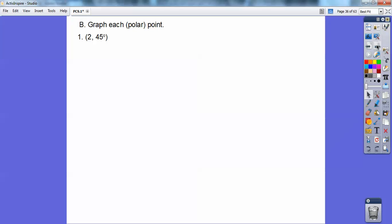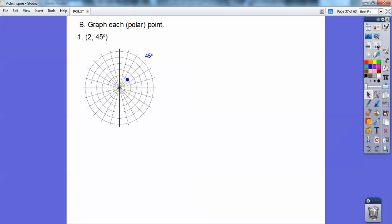All right, so graph each polar point. So 2, 45. Go to the 45 degree angle, and you go out to your second circle, which is radius 2. It's just polar graphing paper. It's like graphing paper.